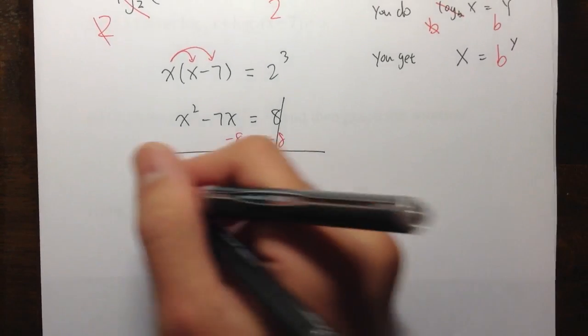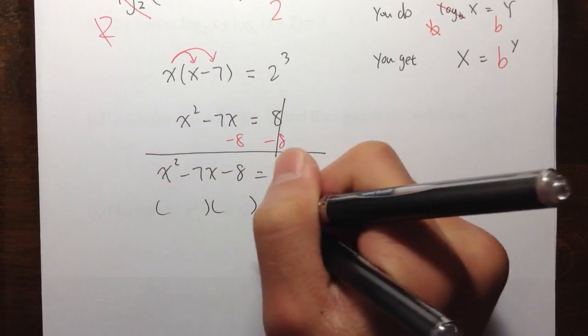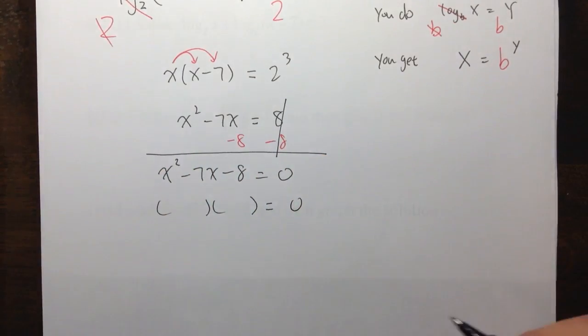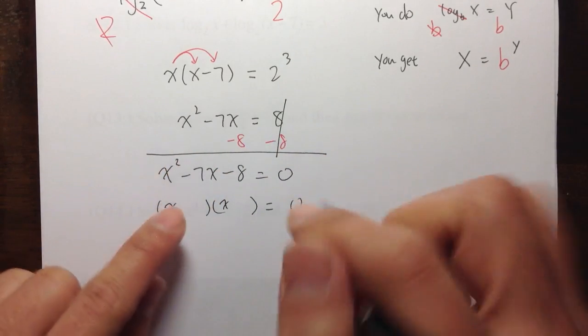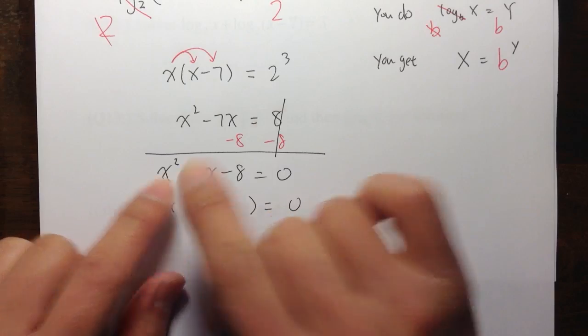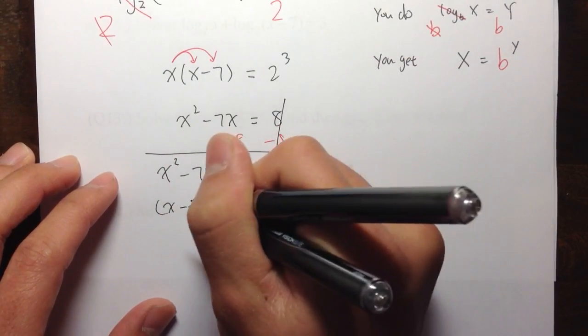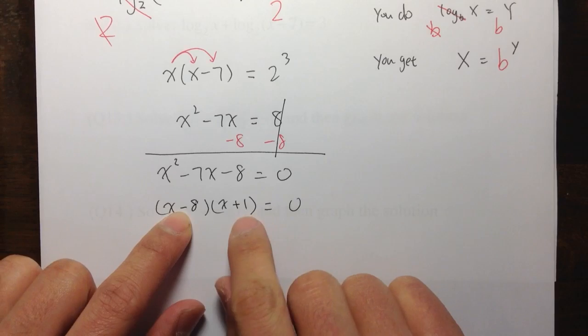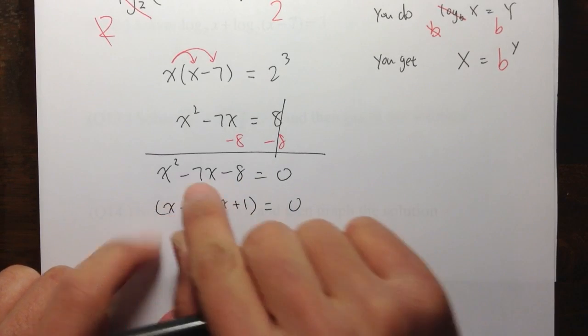And factor this out. So to factor this, let's get ready by putting two parentheses. And that's equal to 0. X times X will be X squared. And then the correct combination is negative 8 plus 1. Now, negative 8 times positive 1 is negative 8. And negative 8 plus 1 is negative 7.